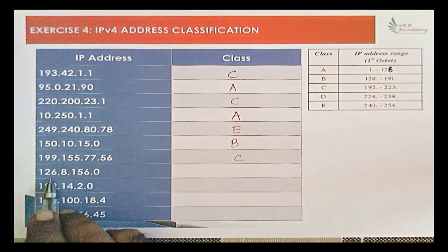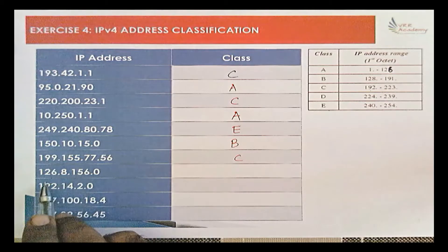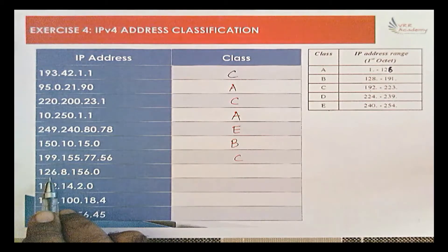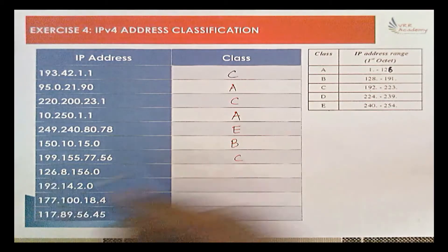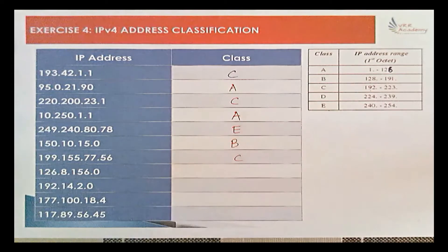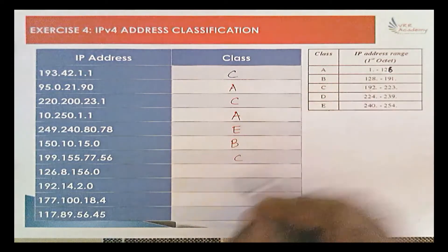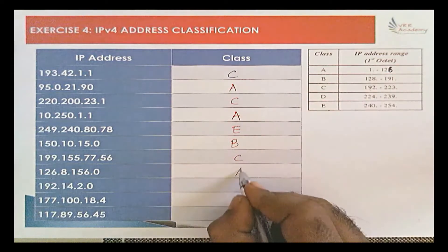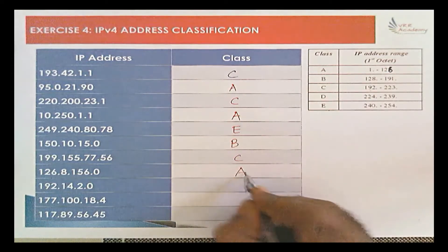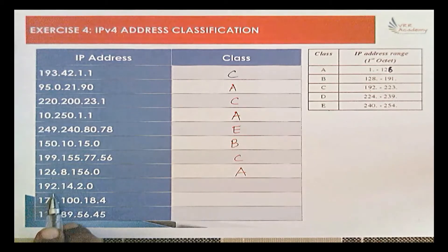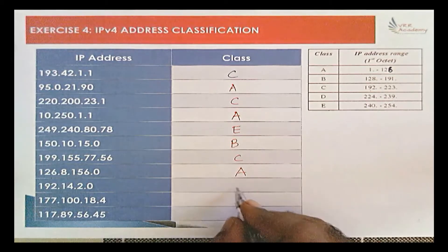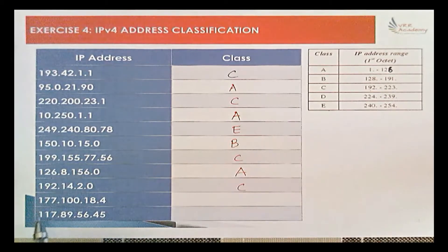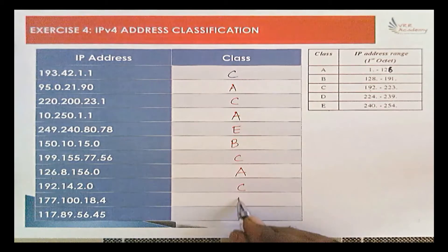For 126.8.156.0, the first octet is 126, which belongs to Class A range. Then 192 is a Class C IP address, and 177 is a Class B IP address.